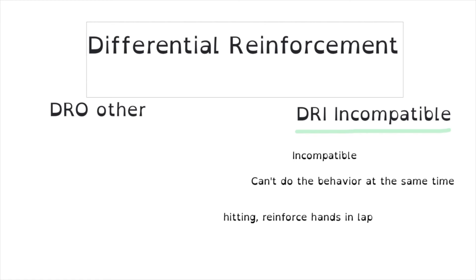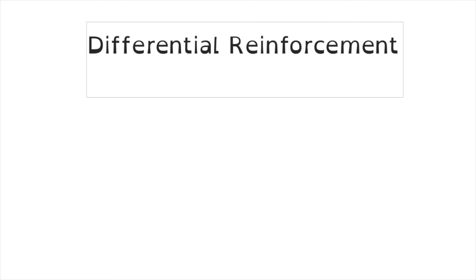These differential reinforcement schedules are never the only thing going on, but it's important to identify that piece of the puzzle to complete the full intervention treatment package. We may also want to teach coping skills and other strategies to help regulate emotions — that's another topic. Other DRI examples include sitting in a chair instead of running around the class.